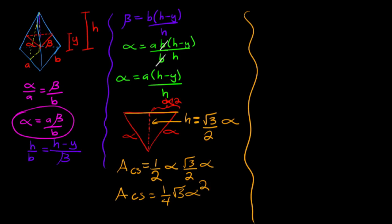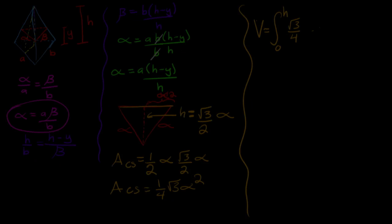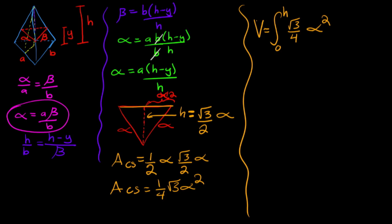The volume equals the integral from 0 to H of square root of 3 over 4 times alpha squared. But we don't want to use alpha because our variable is y. We're going to plug in our formula for alpha and integrate with respect to y.